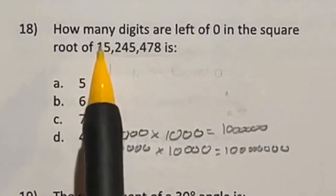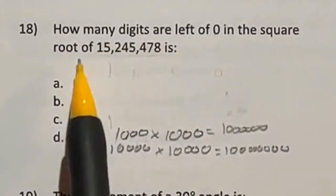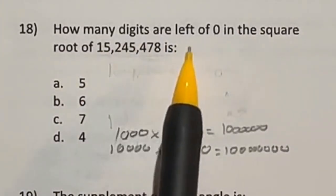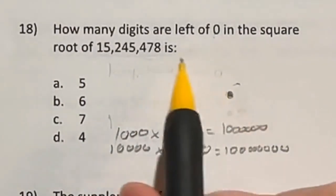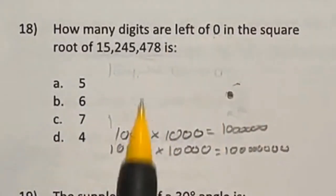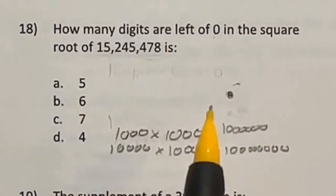Number 18 is a terribly worded question. It says, how many digits are to the left of 0 in the square root of this number right here? But here's the deal. What does left of the 0 mean? Well, in this case, they're actually meaning left of the decimal point. That's just a terrible way of saying it. So in this case, then we're going to look, what would that answer be?